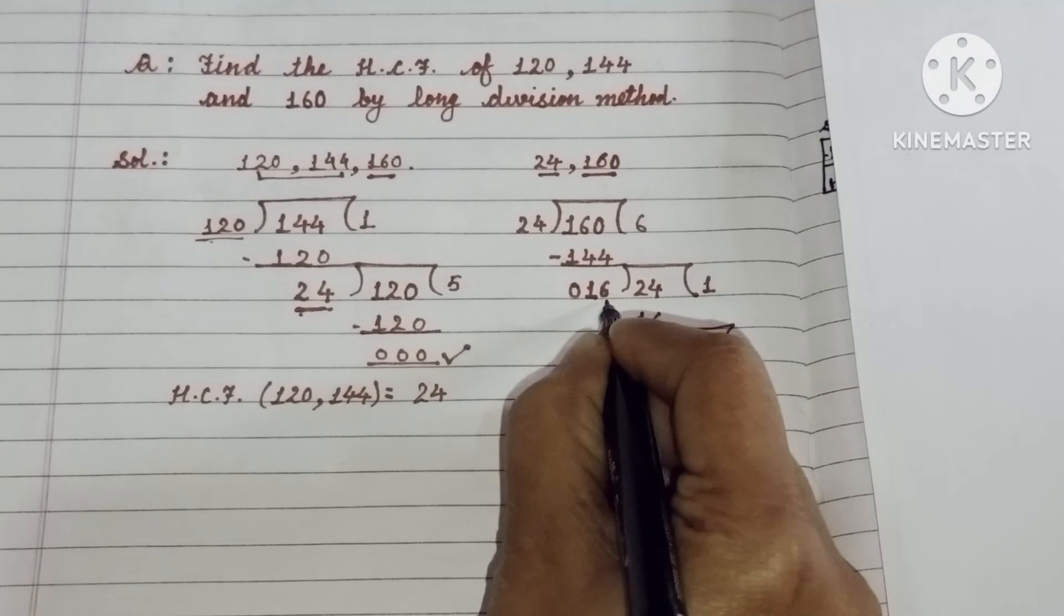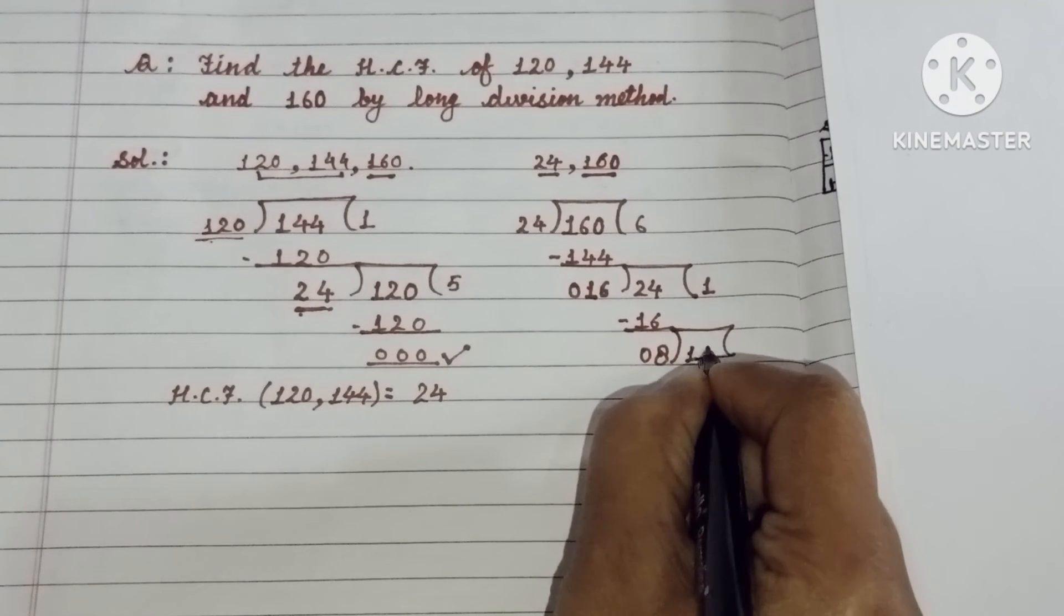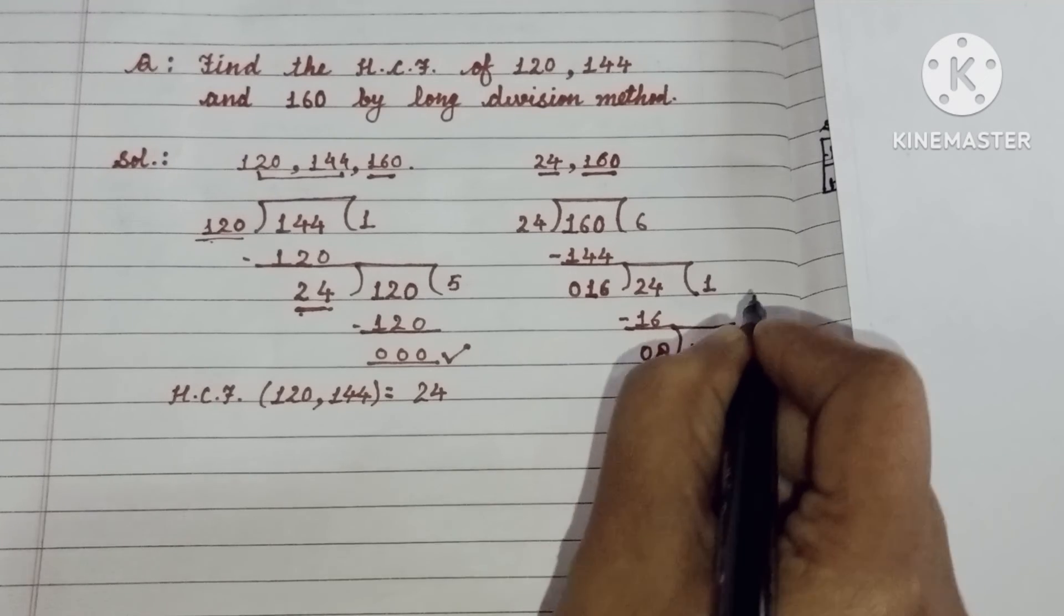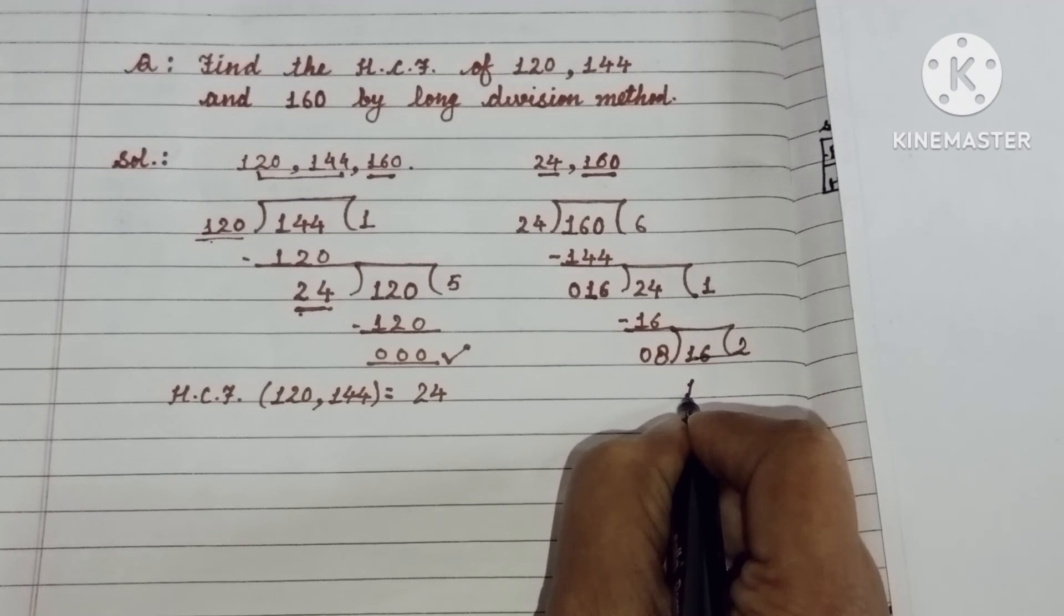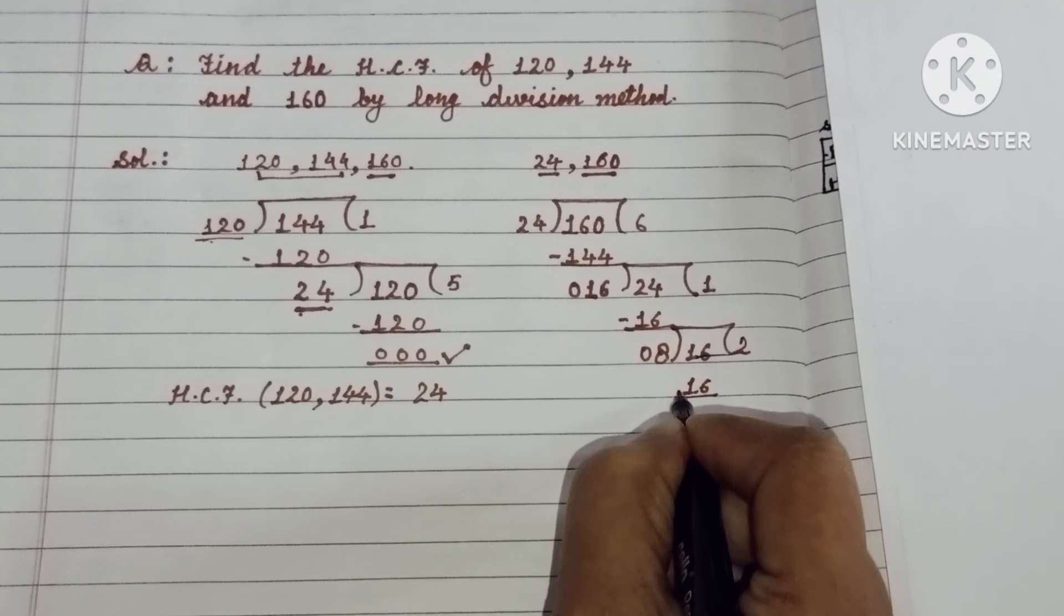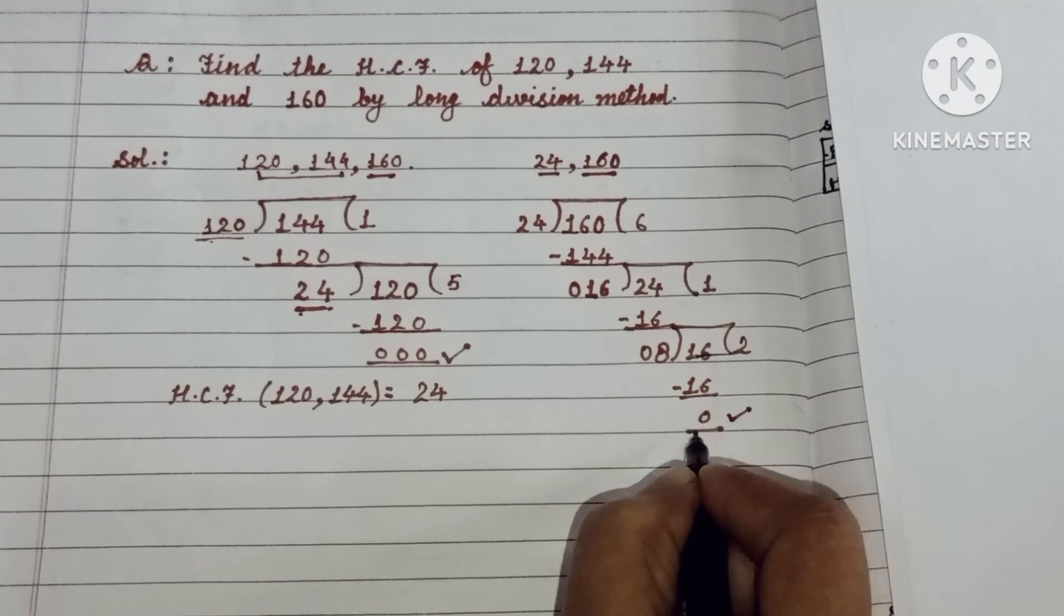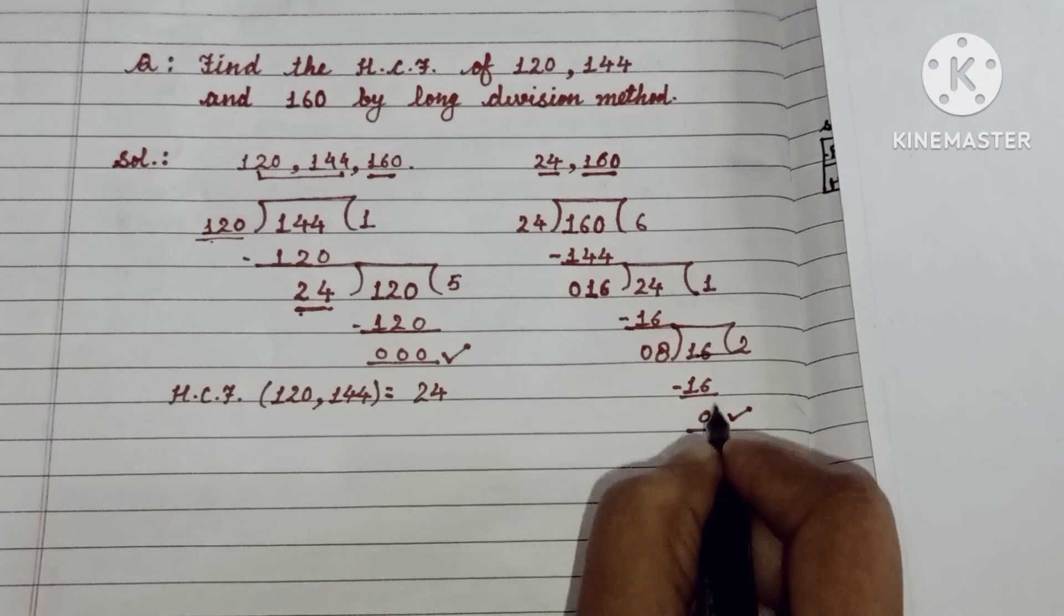Ab ab kya karenge? Is 16 ko new dividend ki place pe kar dhengi. Clear? And this 8 will become the new divisor. So 8 to the 16. And 16 minus 16 will be 0. Now remainder is 0. Or jab bita remainder 0 a gaya hai.